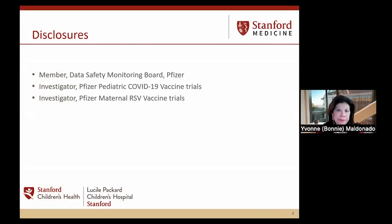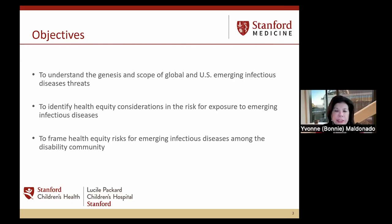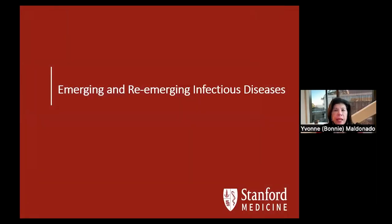These are my disclosures. The objectives today are to understand briefly the genesis and scope of global and U.S. emerging infectious disease threats, to identify health equity considerations in the risk for exposure to emerging infectious diseases, and to look at the national and local framework around health equity risks — specifically some examples from the disability community and how COVID vaccines were allocated during the early days of the pandemic, to serve as a focus for ethical distribution of resources. My discussion will be essentially three different parts.